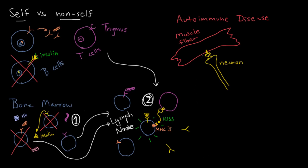In one autoimmune disease, antibodies form against this muscle receptor. They bind to it, either blocking it from responding to neural signals or causing the receptor to be destroyed — both mechanisms have been observed. The result is that the body can no longer activate muscle fibers as easily. This disease is called myasthenia gravis — 'my' relating to muscle, 'asthenia' meaning weakness, and 'gravis' meaning serious, because it becomes serious over time. If you can't activate your muscle fibers, you slowly become paralyzed. This is just one example of an autoimmune disease; you don't need to memorize this exact mechanism.